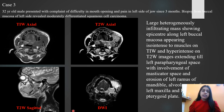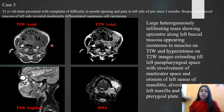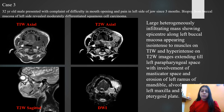In the next case, a 32-year-old male presented with difficulty in opening the mouth and pain in the left side of the jaw for three months. MRI revealed a large heterogeneously infiltrating mass with epicenter along the left buccal mucosa, appearing isointense to tongue muscles on T1-weighted images and hyperintense on T2-weighted images, extending to the left parapharyngeal space with involvement of the masticator space and erosions of the left ramus of the mandible.